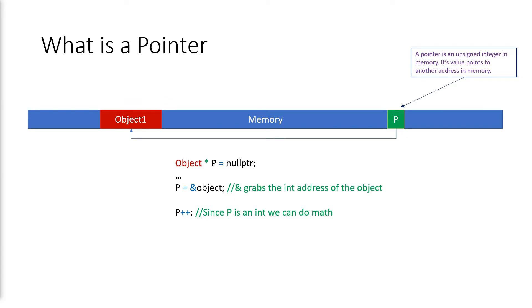Since this pointer is just an integer, we can do math with it. For example, p++ or increase the value of p by 1. This is where the nuance of pointer arithmetic begins.